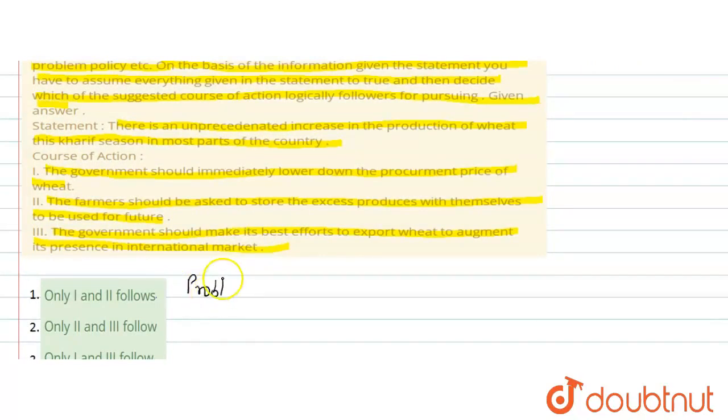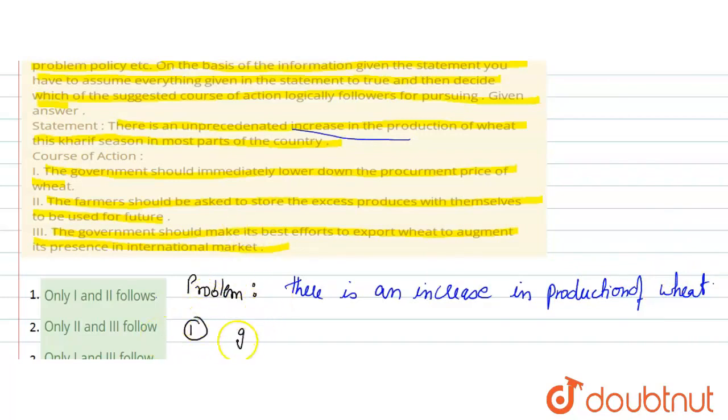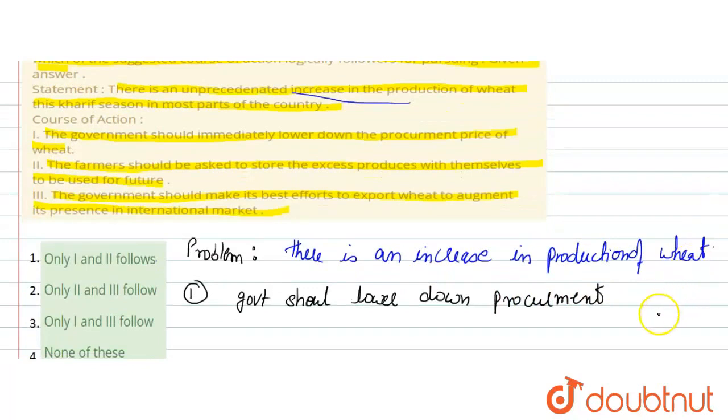The problem according to the course of action. The problem here is an increase in production of wheat. There is an increase in production of wheat, very much more production of wheat. This is the issue. Then the first course of action, what is it? The government should lower down procurement price. This is the minimum support price, the procurement price of wheat. You should buy wheat at this price. Will this solve the problem? This course of action is wrong.